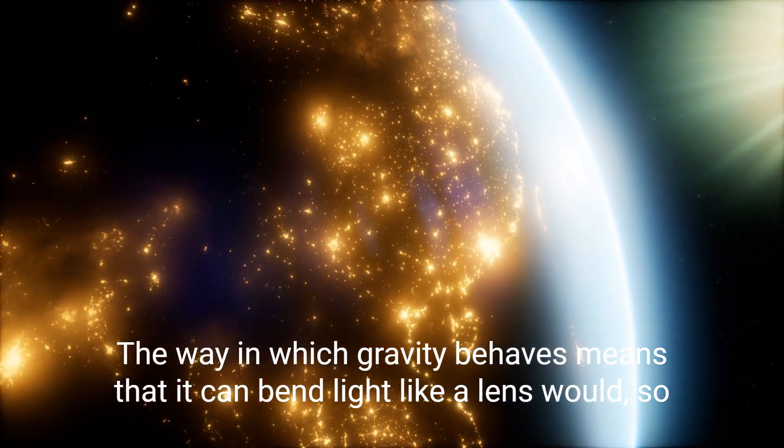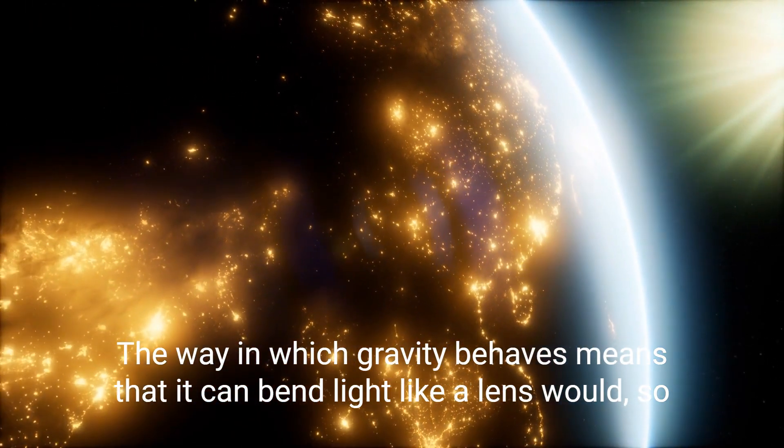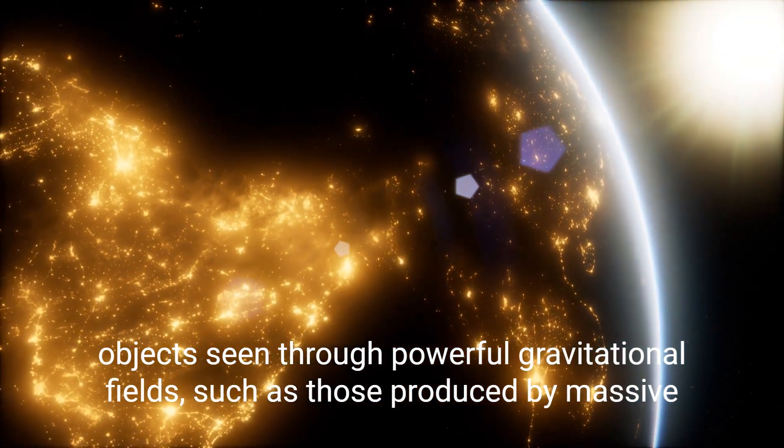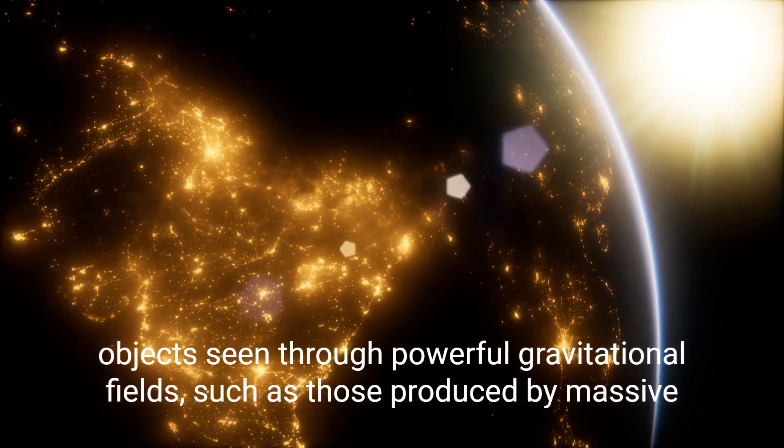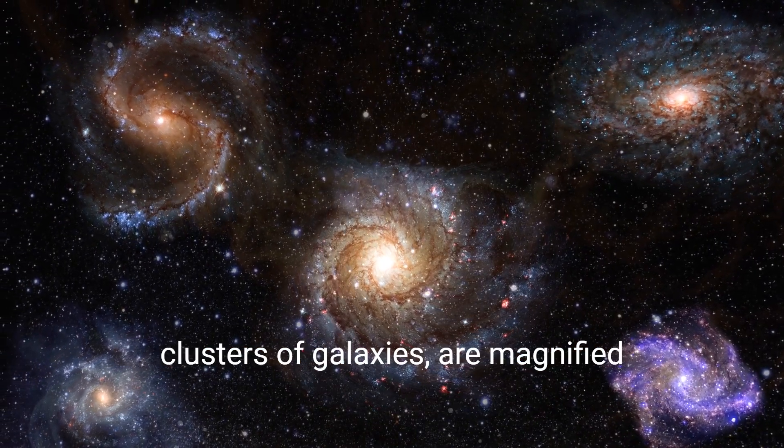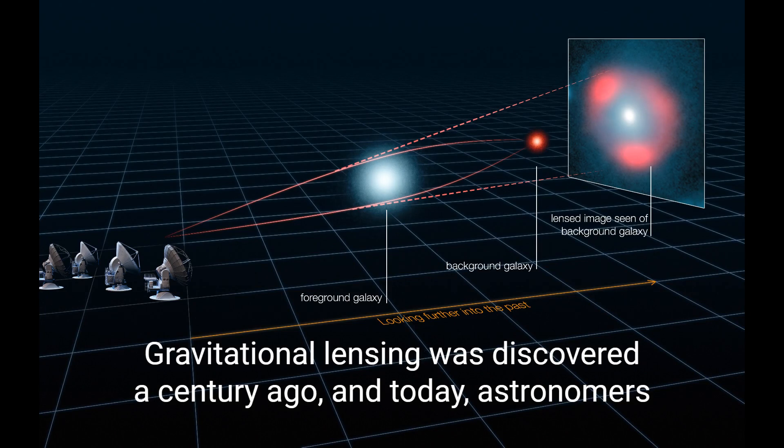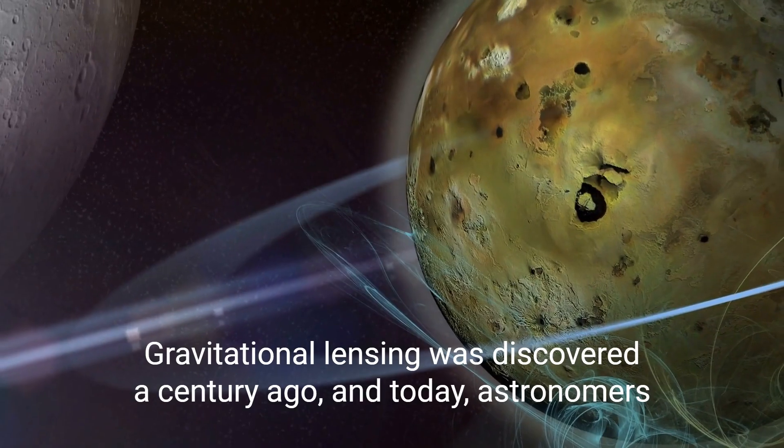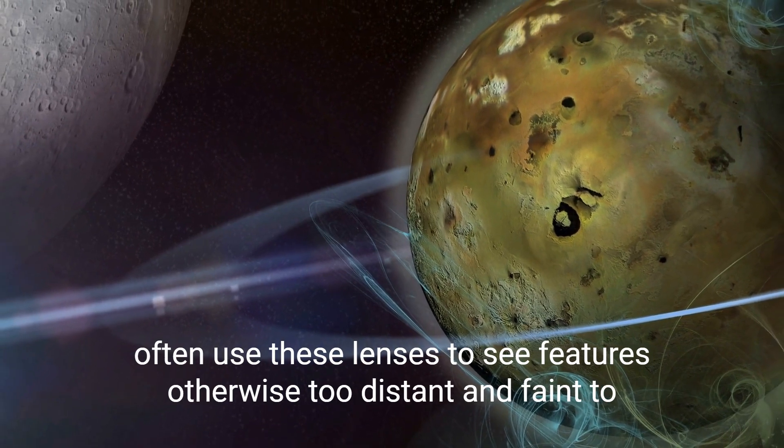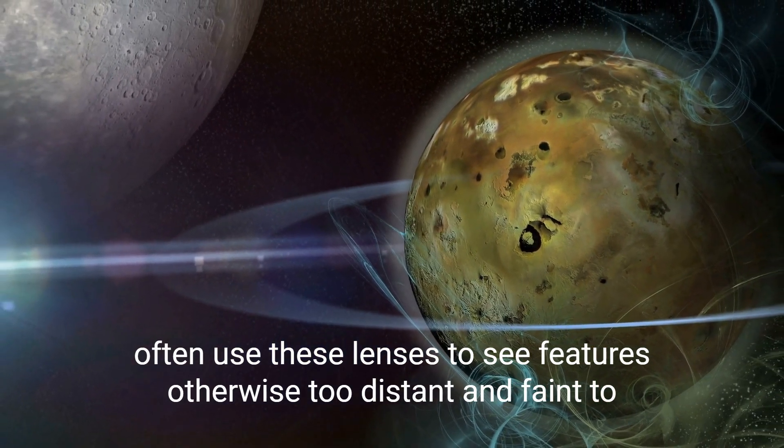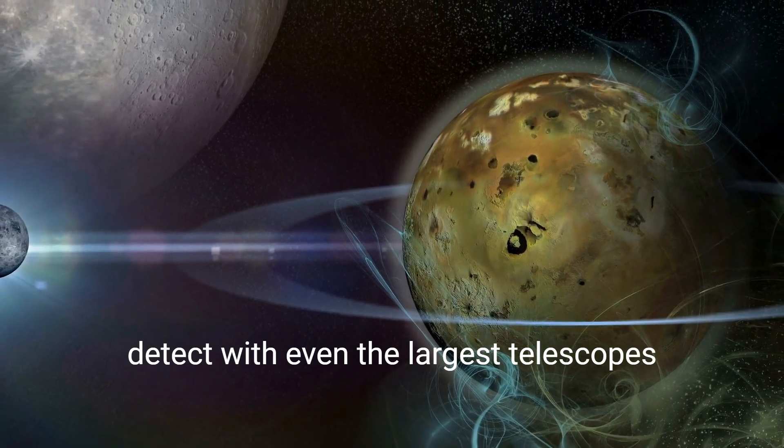The way in which gravity behaves means that it can bend light like a lens would. So objects seen through powerful gravitational fields, such as those produced by massive clusters of galaxies, are magnified. Gravitational lensing was discovered a century ago, and today, astronomers often use these lenses to see features otherwise too distant and faint to detect with even the largest telescopes.